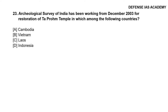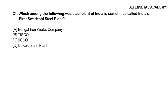Question 23: The Archaeological Survey of India has been working from December 2003 for restoration of the Ta Prohm temple in which among the following countries? The correct answer is option A, Cambodia. Question 24: Which among the following steel plants of India is sometimes called India's first Swadeshi steel plant? The correct answer is Bokaro Steel Plant.